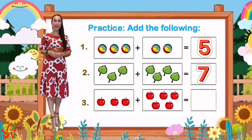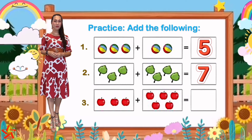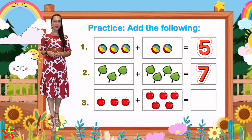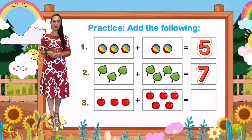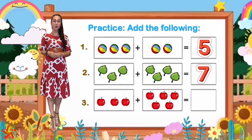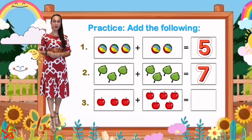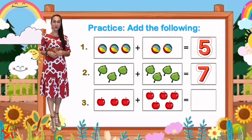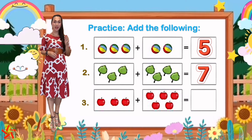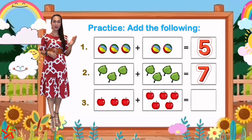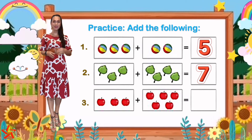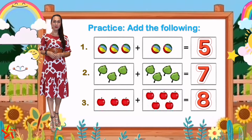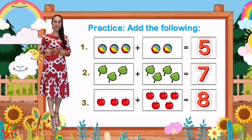And number 3 — the object is apple. How many apples are there altogether? We have 3 and then 5. The answer is 8 apples. Very good.